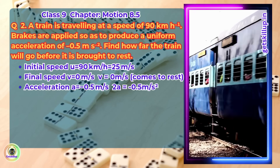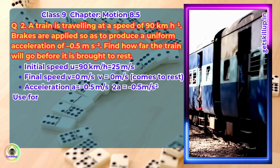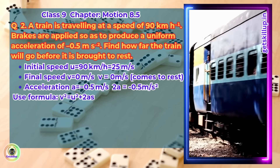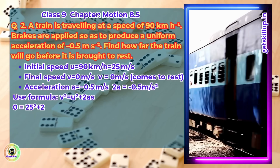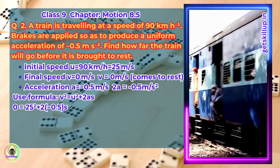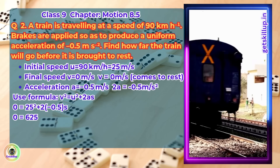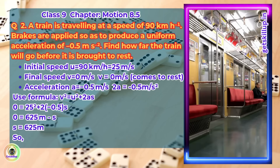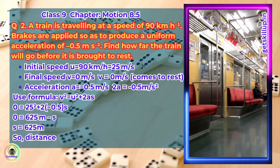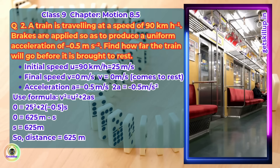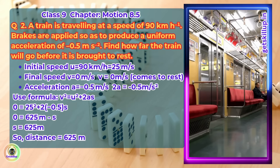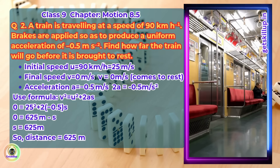Using formula v squared equals u squared plus 2as: 0 equals 25 squared plus 2 into minus 0.5 times s, so 0 equals 625 minus s, therefore s equals 625 meter. Distance equals 625 meter.